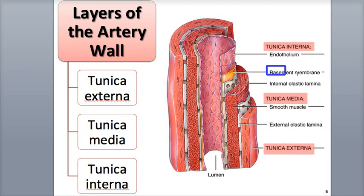Directly under, or deep, to the endothelium is a tough supporting layer of connective tissue called the basement membrane, that binds the endothelial cells to its connective tissue. It is made of collagen protein fibers that give it strength, but also allow stretch and recoil.